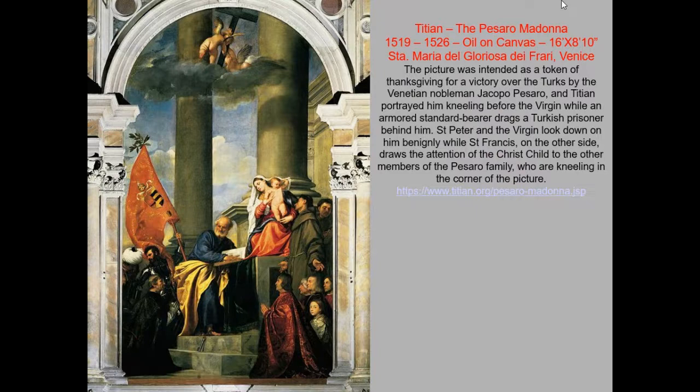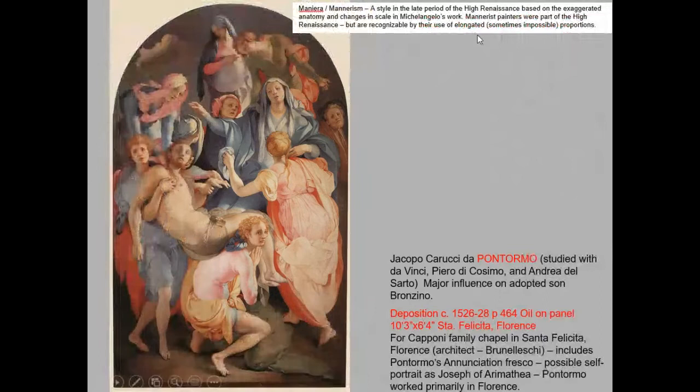Another Titian piece to know is the Pesaro Madonna — a sacred conversation remarkable for its Venetian light and color, but also for placing the enthroned Madonna and Child off to the side of center rather than in the middle of the composition. Instead of looking at her head-on, the image spirals from the patrons up to the saints revering her to the throne itself, operating in a more fully three-dimensional way.